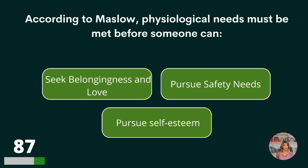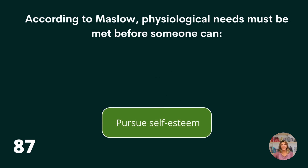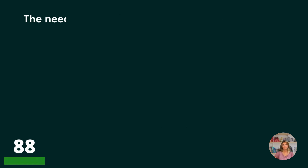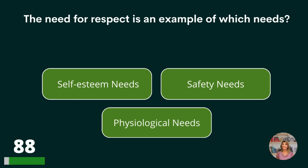According to Maslow, physiological needs must be met before someone can seek belongingness and love, pursue safety needs, or pursue self-esteem? Pursue self-esteem.